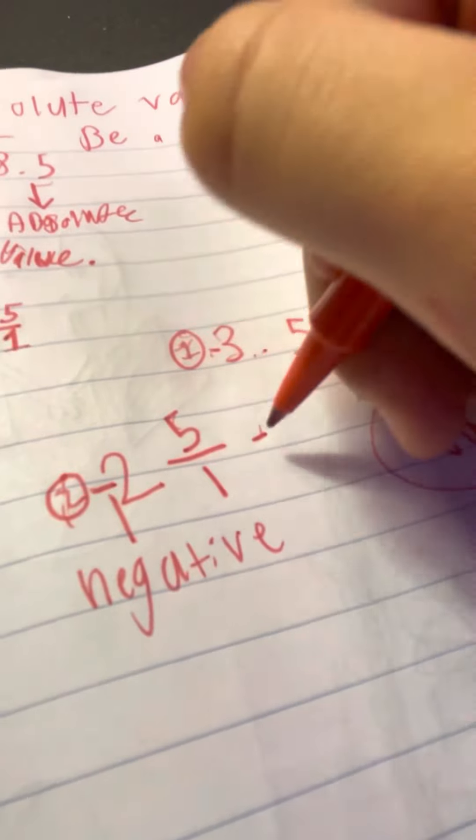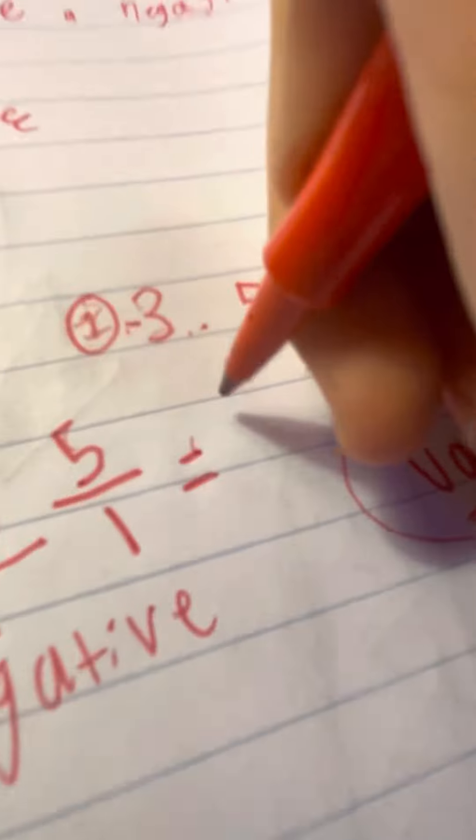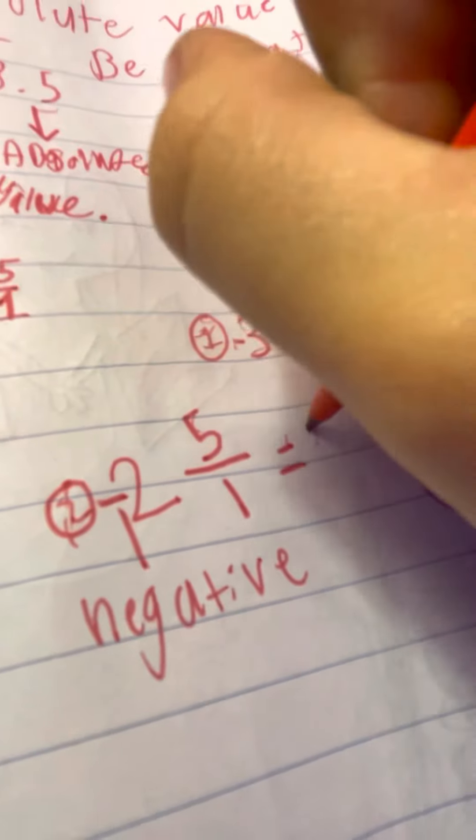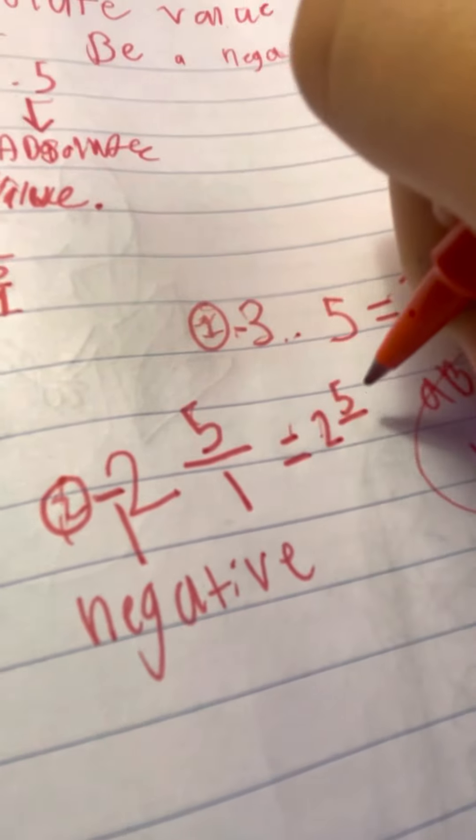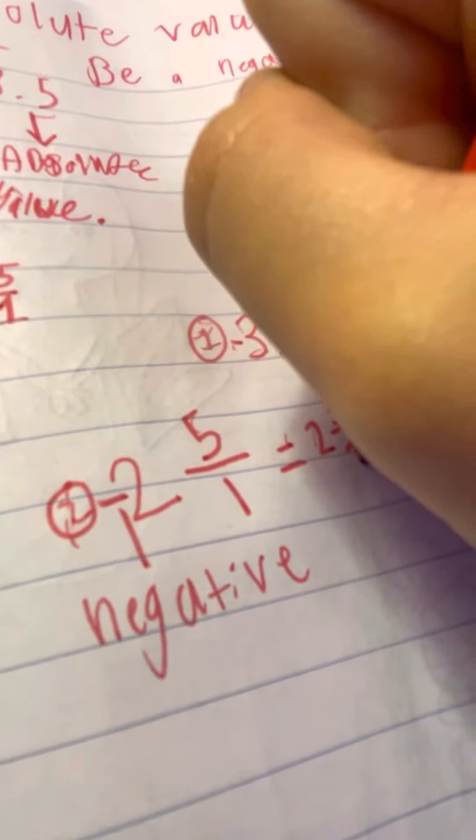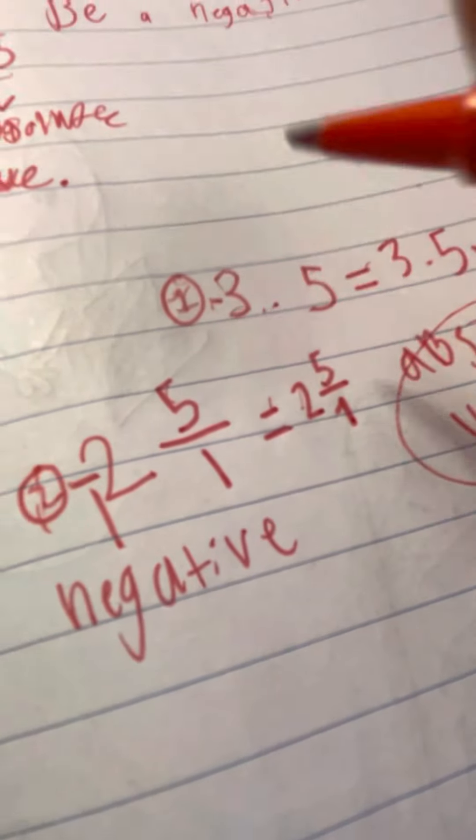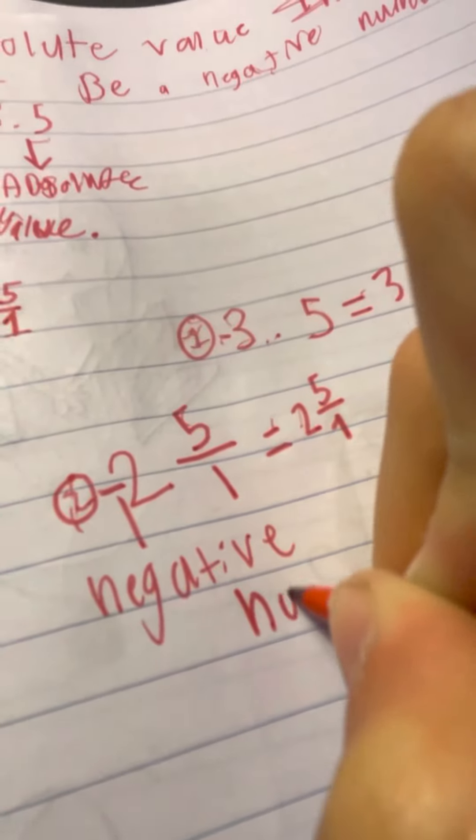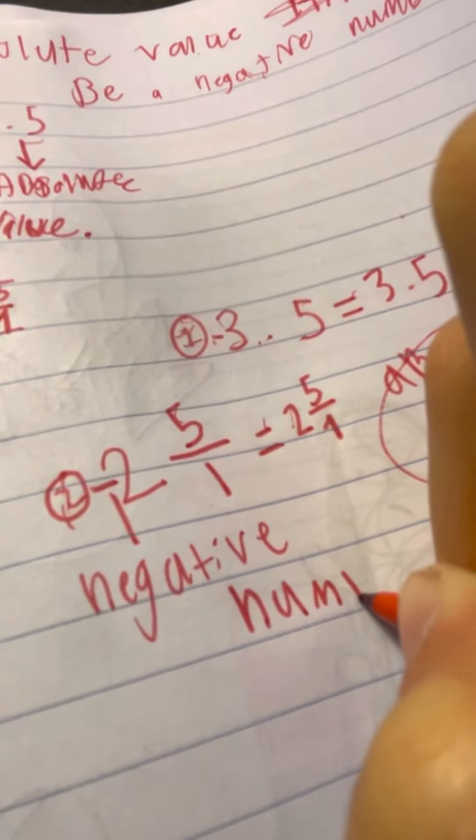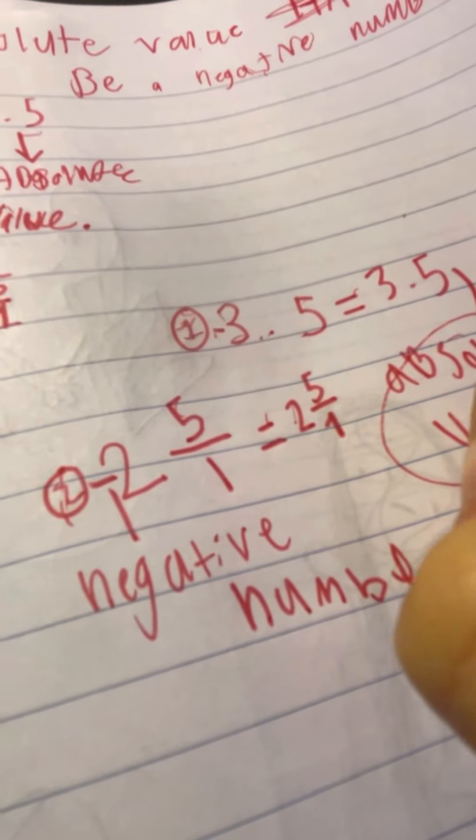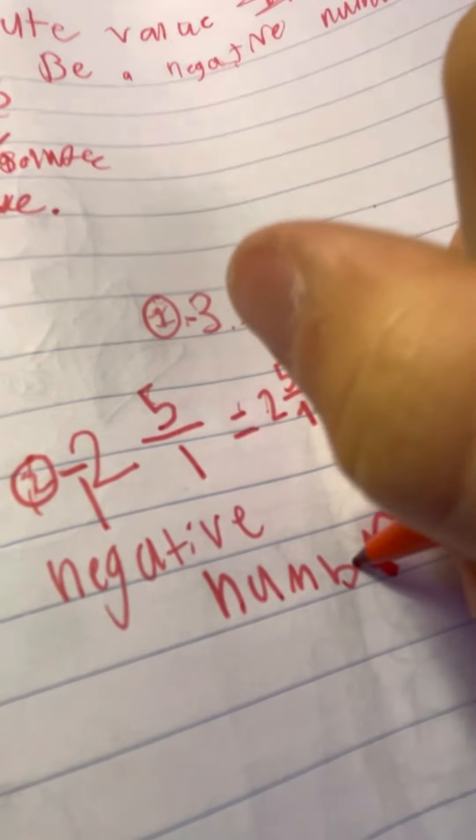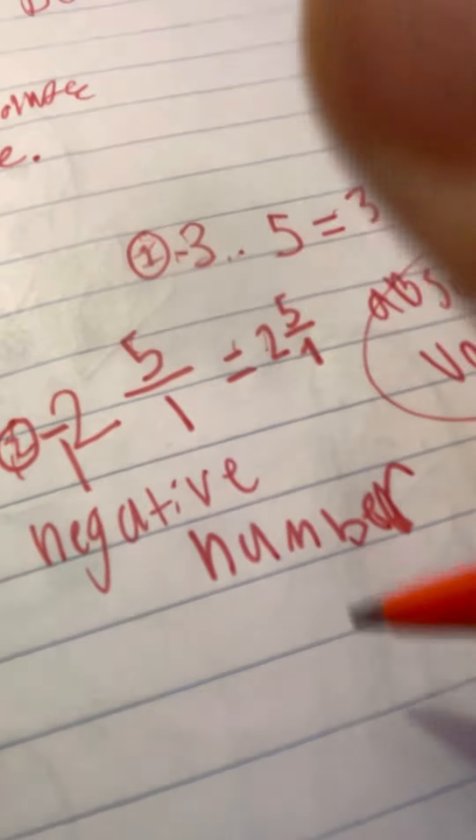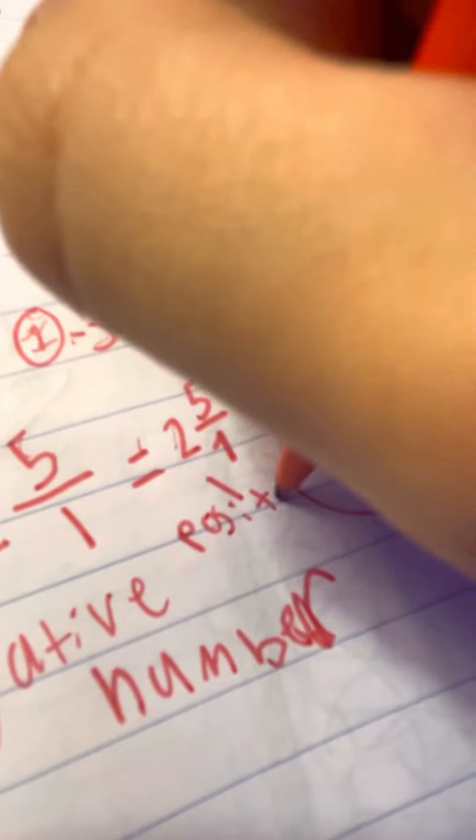So make this thing right right over here, so we can try to be a positive number. So this is a negative number. Negative. Oh my gosh, my hand slipped when this happened. It's a negative number. And then this.